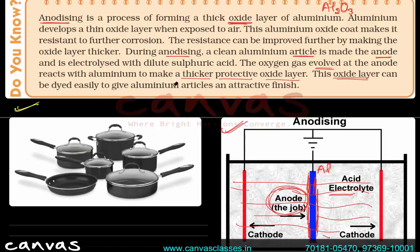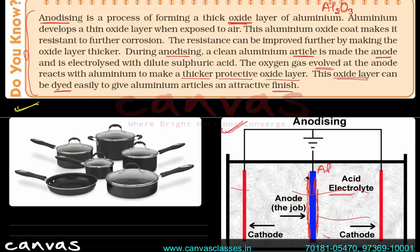The thick oxide layer formed is a protective oxide layer — this is called anodizing. This oxide layer also resists acid and base effects, making it very safe for cooking and high-temperature applications. The oxide layer can also be dyed in different colors, which is why anodized aluminum bottles and cookware come in blue, green, and other colors.